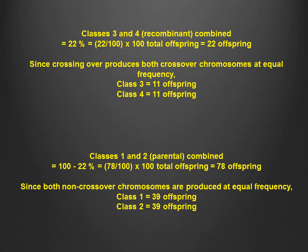Once again, both non-crossover chromosomes are produced at equal frequencies. Therefore, each of these two classes make up 39 percent, or 39 of the 100 offspring.